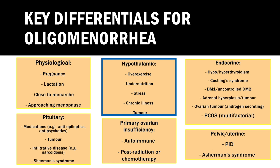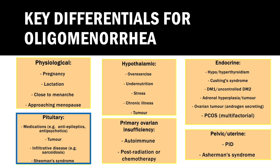You think through hypothalamic causes, remembering that the hypothalamus runs the show, and that anything indicating to the hypothalamus that the body lacks resources to get pregnant would have an impact — such as over-exercise, under-nutrition, stress, or chronic illness. Rarely, there could be a hypothalamic tumour. For the pituitary, you consider medications such as antiepileptics like phenytoin or antipsychotics like risperidone, a pituitary tumour, infiltrative disease such as sarcoidosis, Sheehan's syndrome, or pituitary infarct after a postpartum haemorrhage.